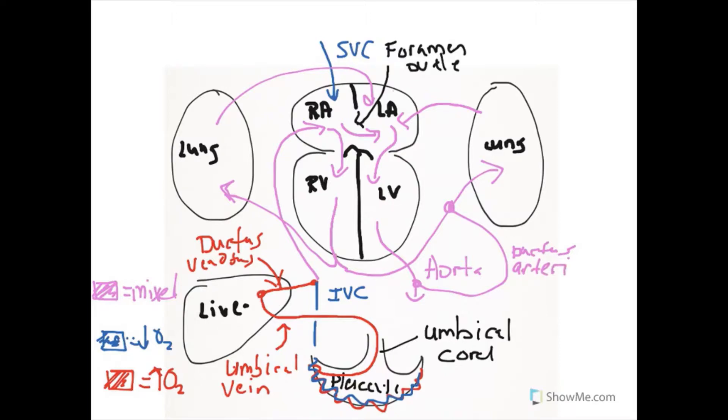The ductus arteriosus shunts blood from the lungs, just as the foramen ovale did, but in a different way. It's between the aorta and the pulmonary arteries. Let's label the pulmonary arteries here.